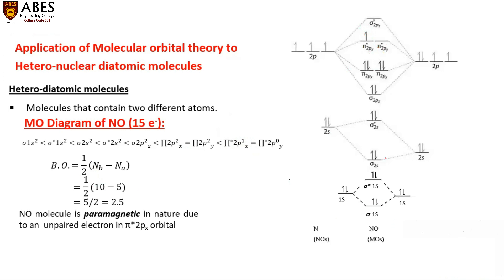When we calculate the bond order: 10 electrons are present in bonding molecular orbitals and 5 electrons are present in antibonding molecular orbitals. Therefore, the bond order = (10 − 5) / 2 = 2.5.